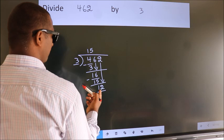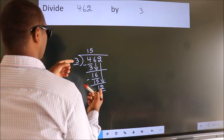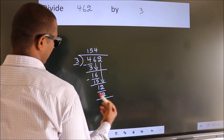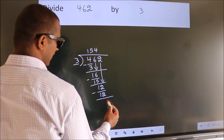When do we get 12? In the 3 table. 3 4s 12. Now, we subtract. We get 0.